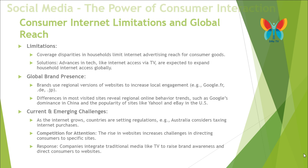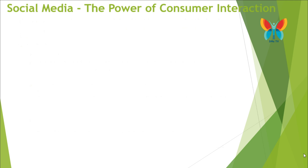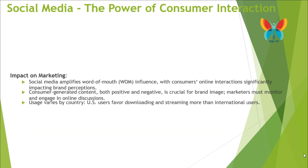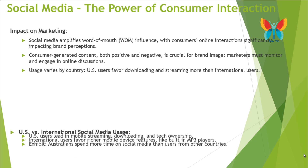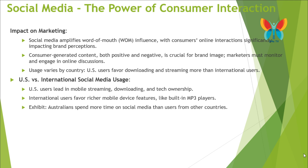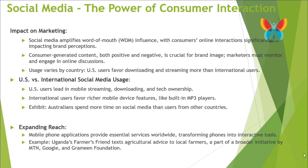Mobile phone applications provide essential services worldwide, transforming phones into interactive tools. For example, Uganda's Farmer's Friend texts agricultural advice to local farmers as part of a broader initiative by MTN, Google, and the Grameen Foundation. During the 2010 Haiti earthquake, a text-to-donate campaign raised over $2 million in 24 hours for the Red Cross, and platforms like Twitter enabled fast, widespread communication and mobilized global support for relief efforts.